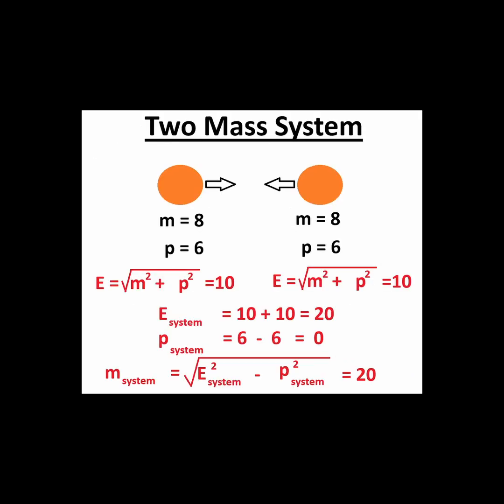The total energy of the system is 10 plus 10, which equals 20. The total momentum of the system is zero since the momentums of each individual object are equal and opposite.